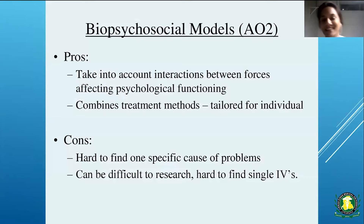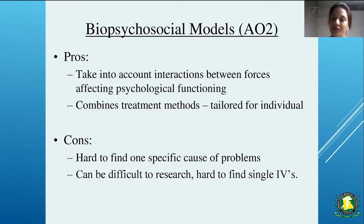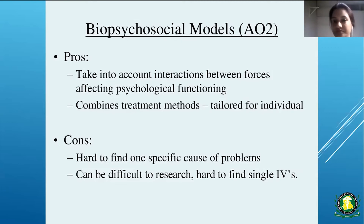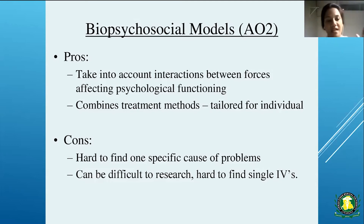Like any model, there are pros and cons. One pro is taking into account the interaction between forces affecting psychological functioning — the environment, the family, social peer pressures — and combining treatment tailored for the individual. For example, for a patient with chronic disease like obesity, hypertension, or diabetes, prescribing pills is not the only way. We can tailor it by prescribing physical activity, providing programs related to hypertension management, educating them, and promoting health. Everything works together, and this is what the biopsychosocial model is about.